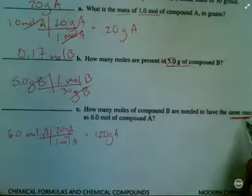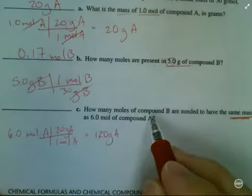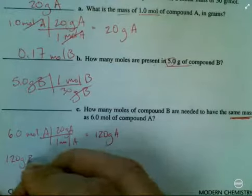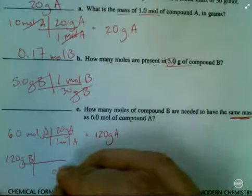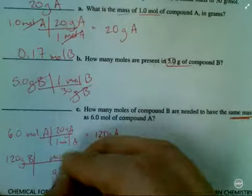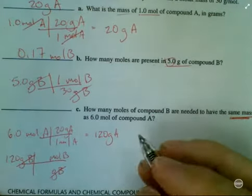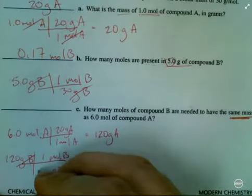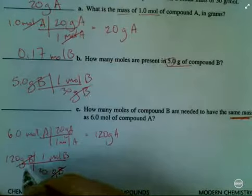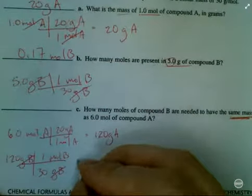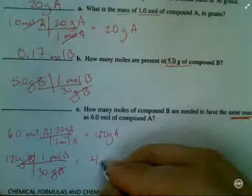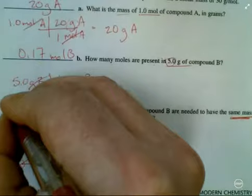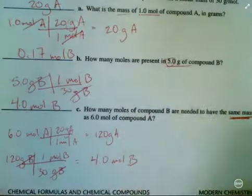Now, we want to have the same mass, but figure out how many moles of compound B that is. So I'm going to start with 120 grams of compound B. Set up my conversion factor with grams of B on the bottom, moles of B on the top, so that these grams will cancel. Now, for every 1 mole of B, I have 30 grams. And so again, I'm so smart, I can do this off the top of my head. So that's going to be 4 moles of B.